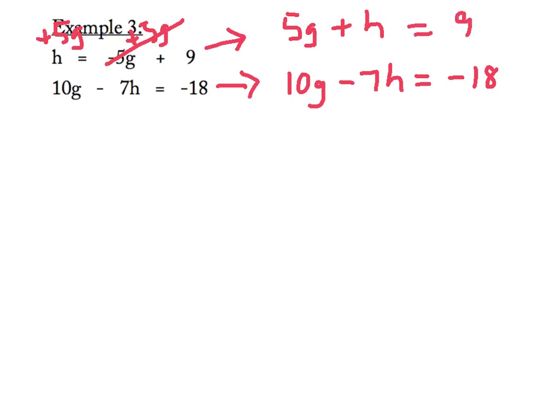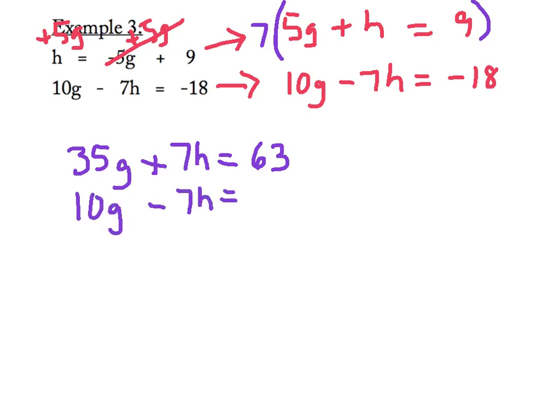Now I also still need to create opposites in one of my columns. And I'm thinking that in the H column here, I've got a 1H and a negative 7H. If I multiply that top equation by 7, then I will be creating the opposites that I need. So I'm going to rewrite that, and multiplying will give me 35G plus 7H is equal to 63. That second equation, I'm going to rewrite exactly the way it was, but put it underneath so it'll be easier to add.